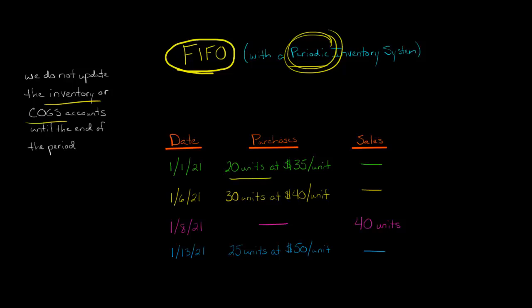On January 1st, we purchase 20 board games at a cost of $35 per unit. And then on January 6th, we make a second purchase, but this time we buy 30 board games and it costs $40 per unit. So the price is different.